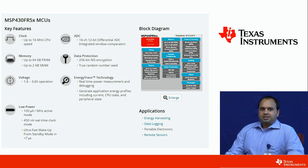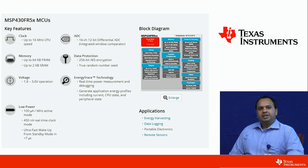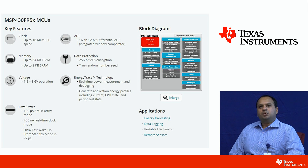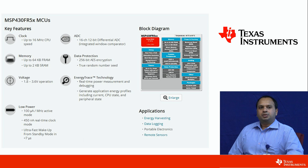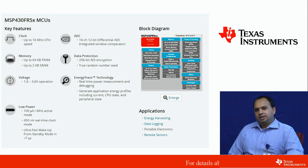You can see the current consumption figures of this family. In the active mode, you can get up to 100 microamps per megahertz performance. So if your application is running at 16 megahertz, you will only consume 1.6 milliamps. Not even in the active mode, but also in the standby mode or in the real-time clock mode, the controller consumes only 450 nanoamps. Now with a battery — let's say a CR2032 battery —